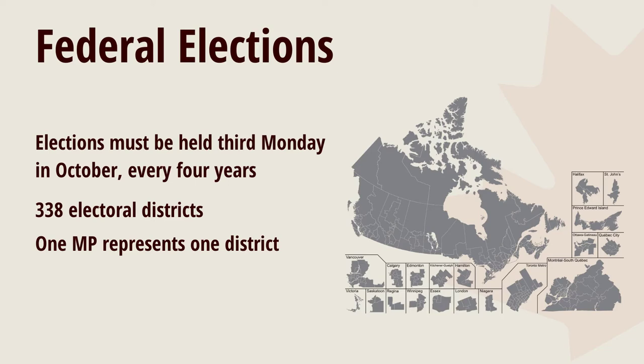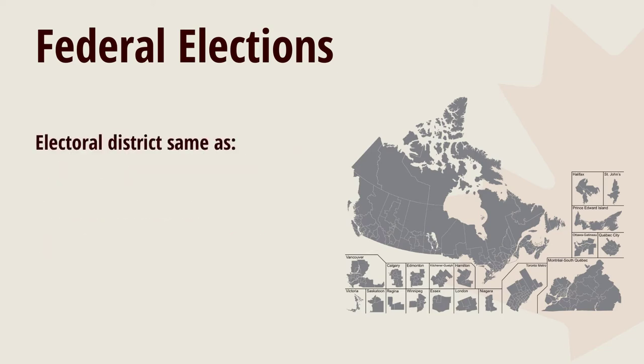Other words in the guide that also mean electoral district are ridings and constituencies. Canadian citizens who are 18 years and older can run in an election to become an MP. There can be many candidates, or people who run for office, in an electoral district, and that's a good thing because it's healthy to have competition so that you get the best MP.